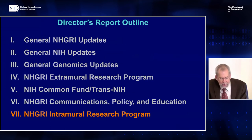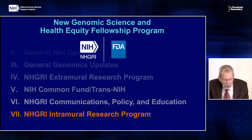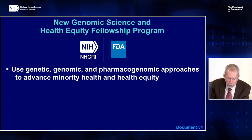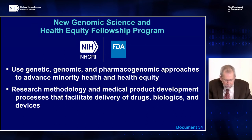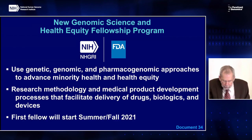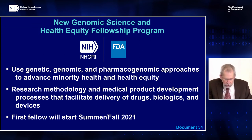Finally, moving on to NHGRI's Intramural Research Program: in January, NHGRI's Intramural Research Program established the Genomic Science and Health Equity Fellowship Program in partnership with the FDA's Office of Minority Health and Health Equity. This program will prepare fellows to use genetic, genomic, and pharmacogenomic approaches to advance minority health and health equity, trained in research methodology and medical product development. The fellowship is currently open for applications, with the selected fellow starting in summer or fall of this year. The first fellow will be co-mentored by researchers from NHGRI, FDA, and the NIH Clinical Center to pursue genomics research related to blood transfusion support for patients with sickle cell disease.